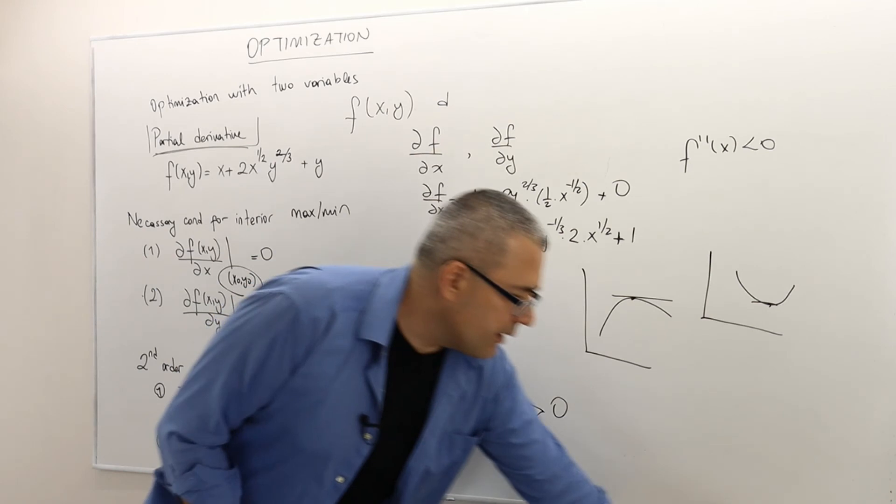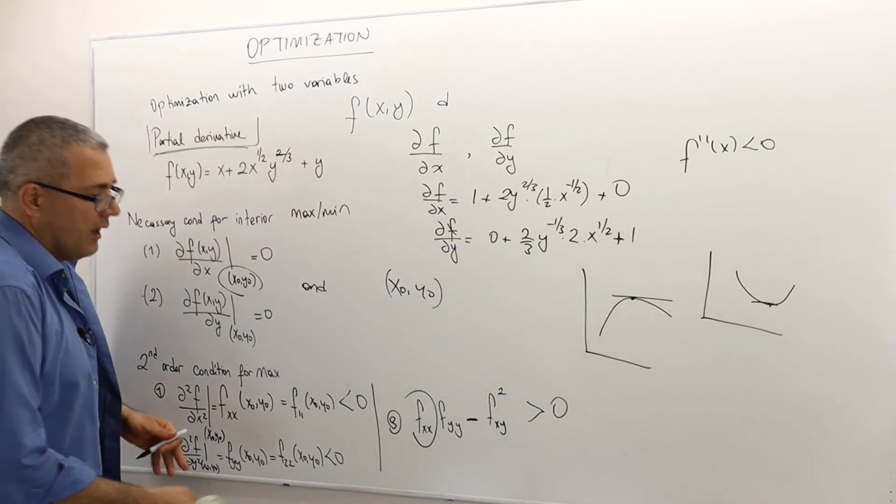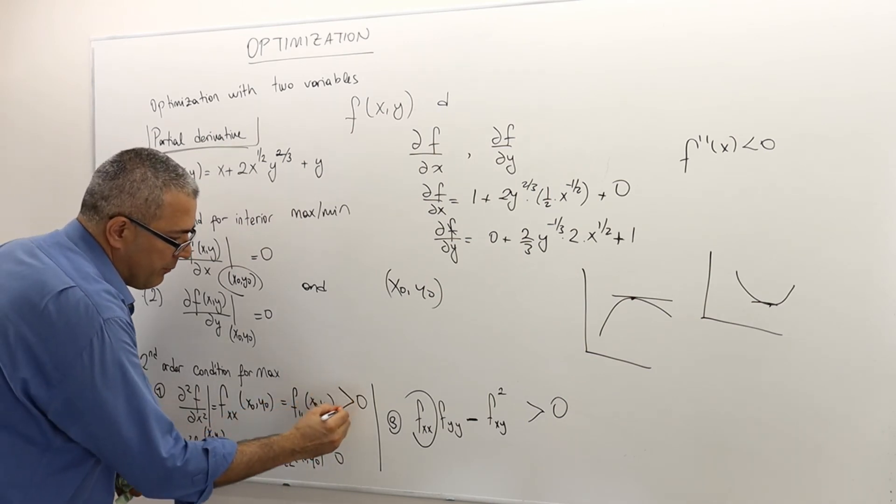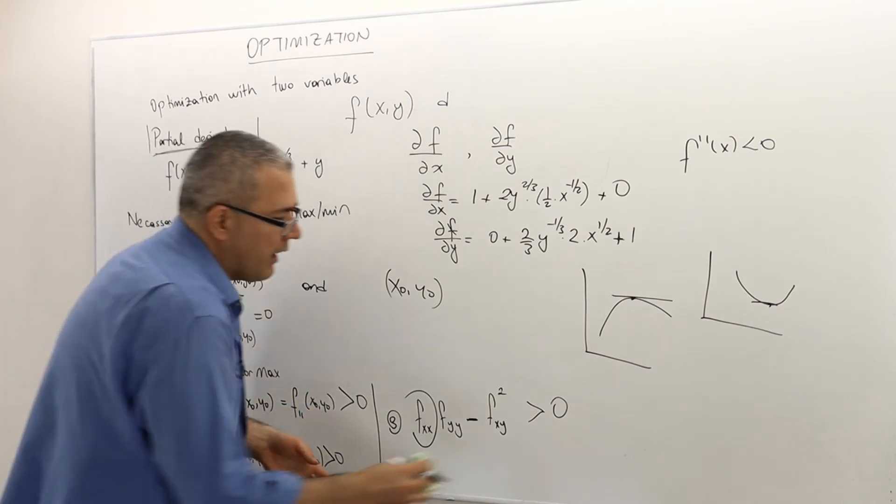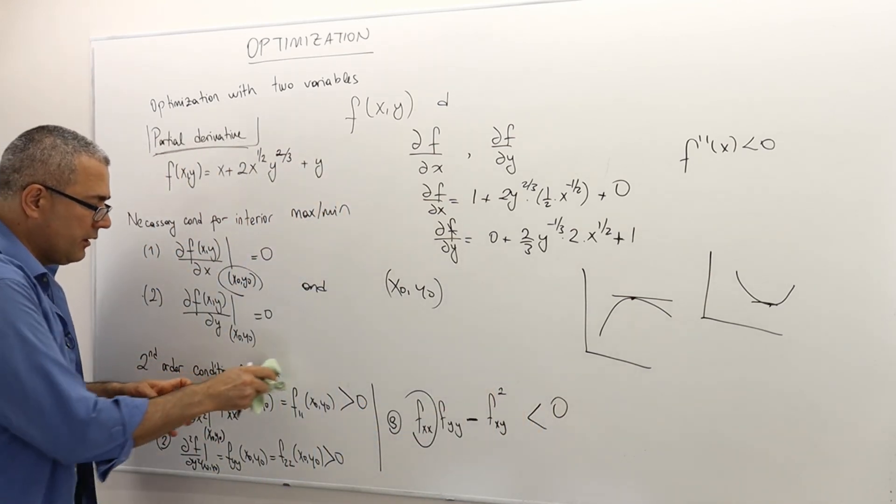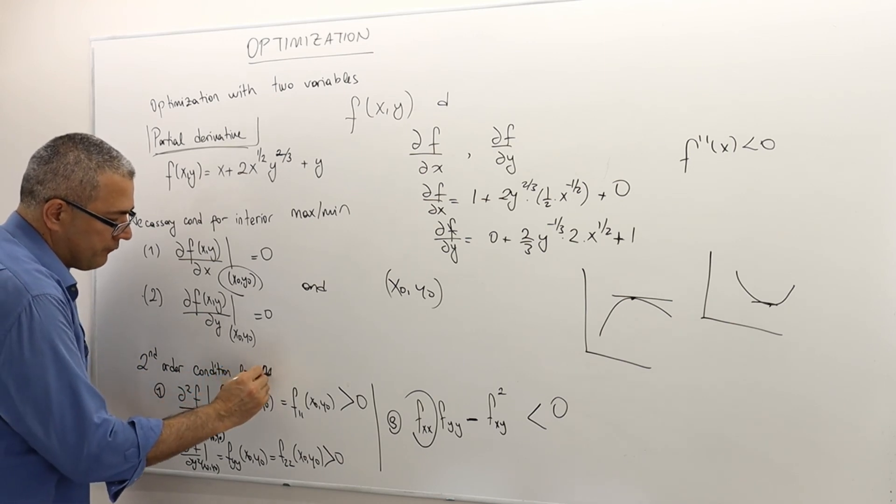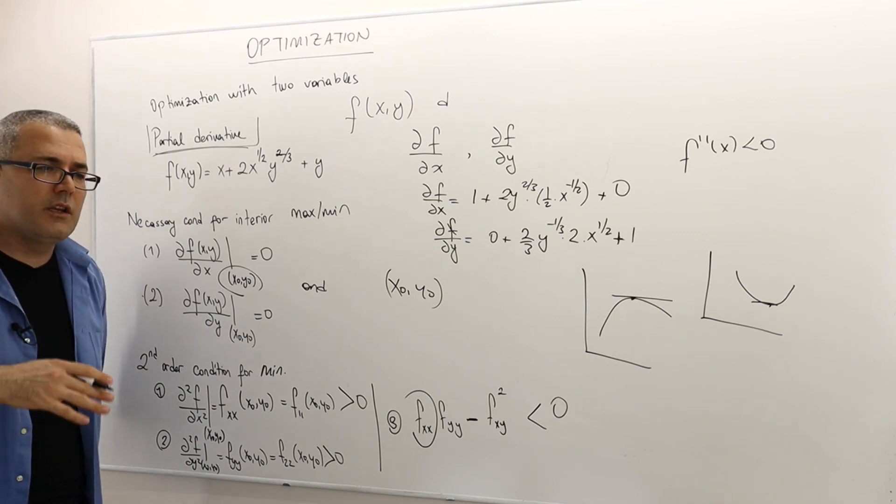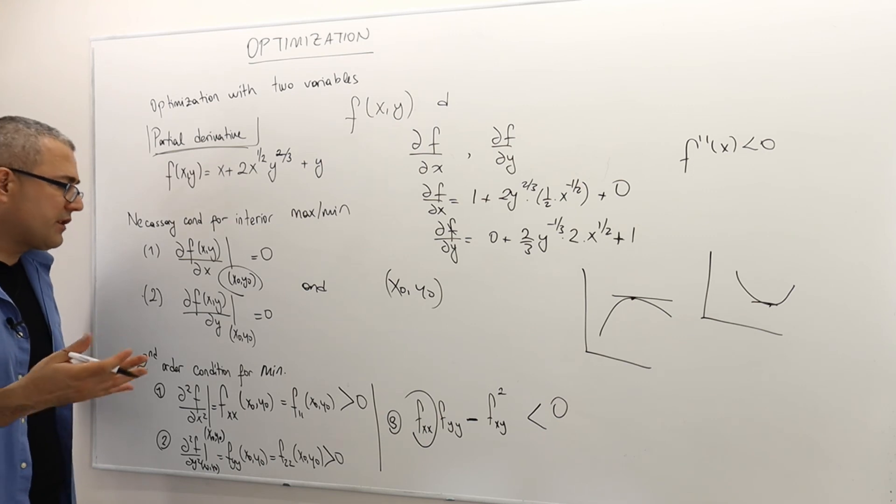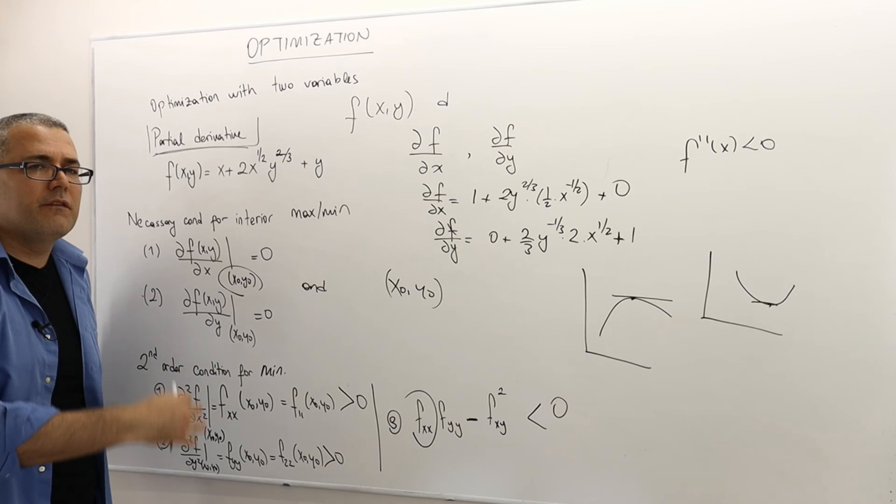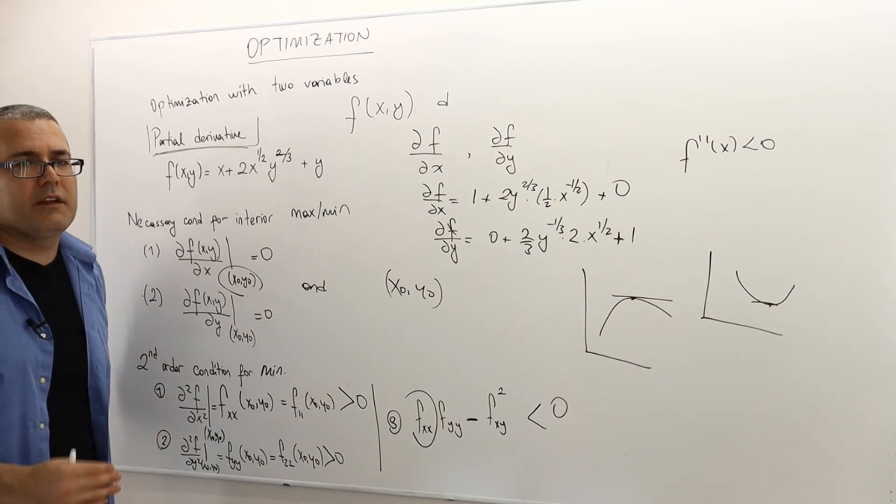What about minimum, local minimum? Well, in this case, the signs should be on the other way around. So this should be positive. This should be positive. And this should be negative. That's it. So that's the second order condition for minimum. So very similar to the idea of sufficient condition in one variable case. It's just that because I have two variables, I have now partial derivatives and everything has to be defined with the partial derivatives.